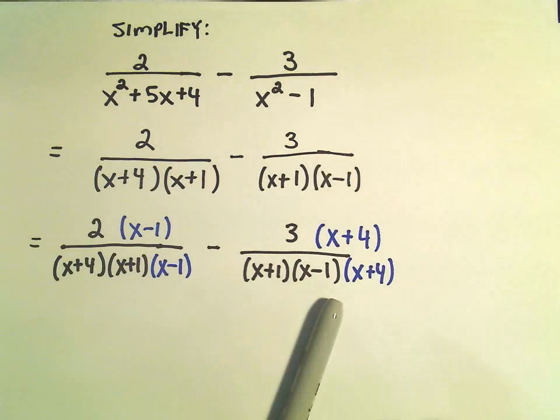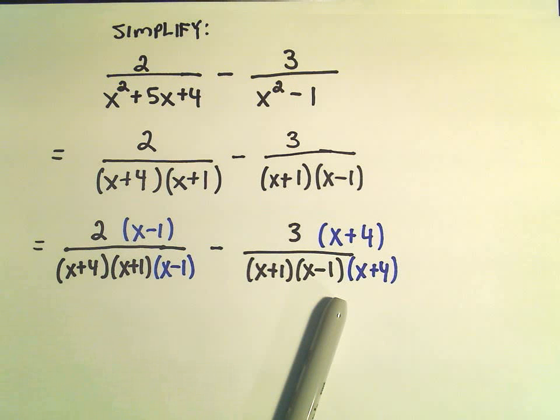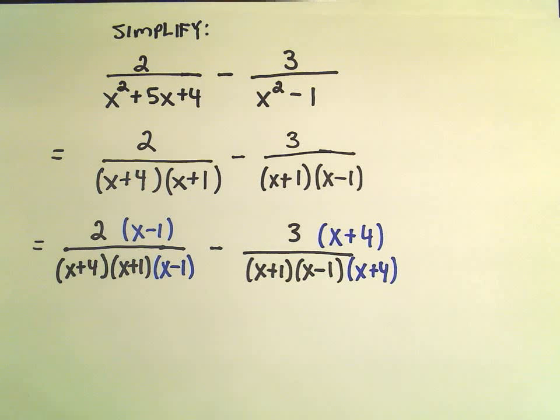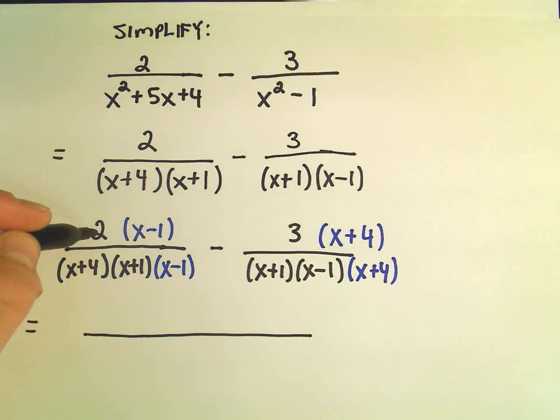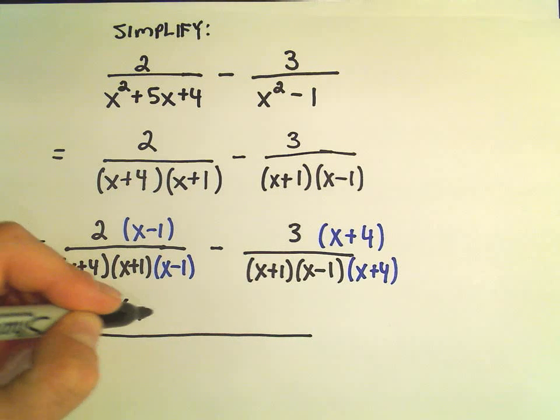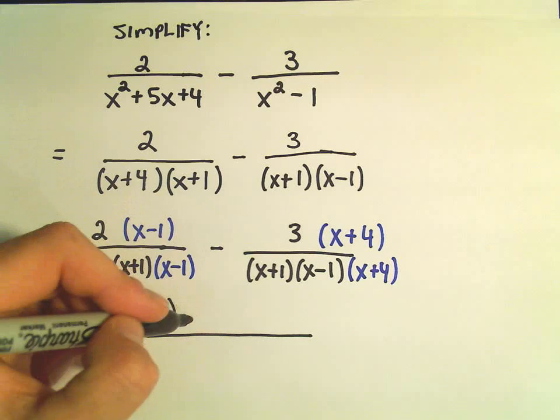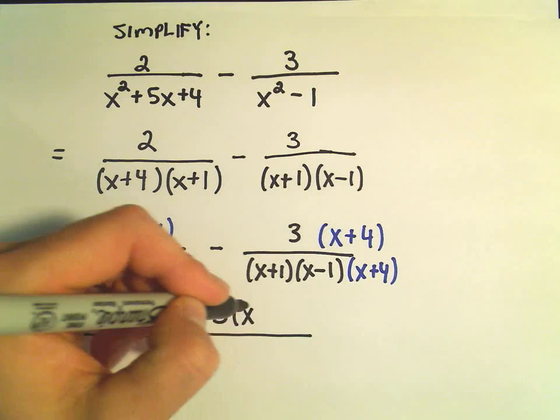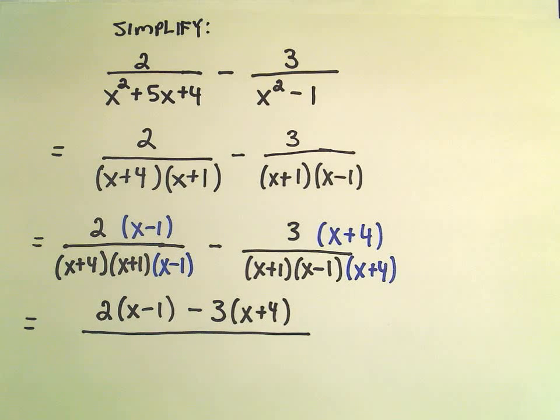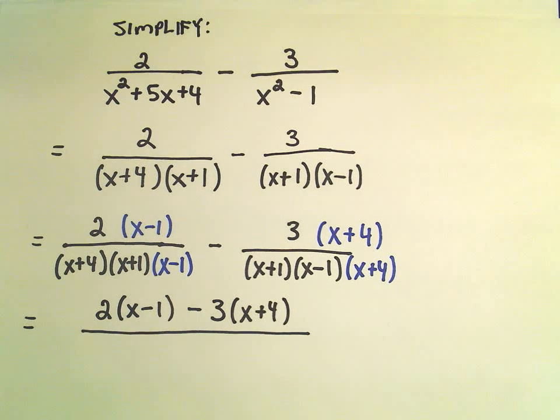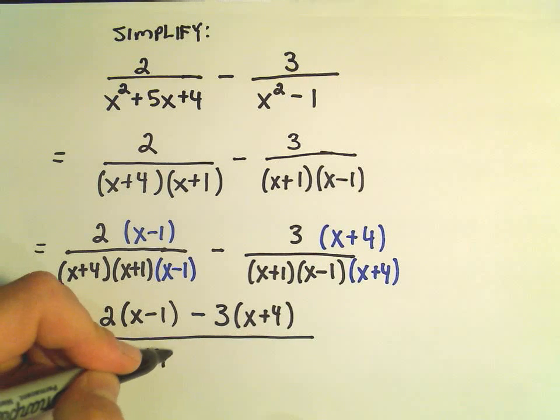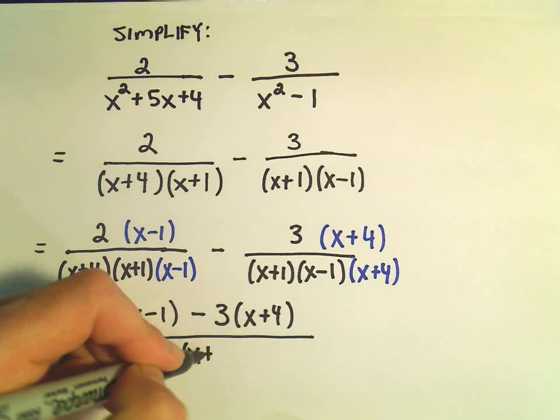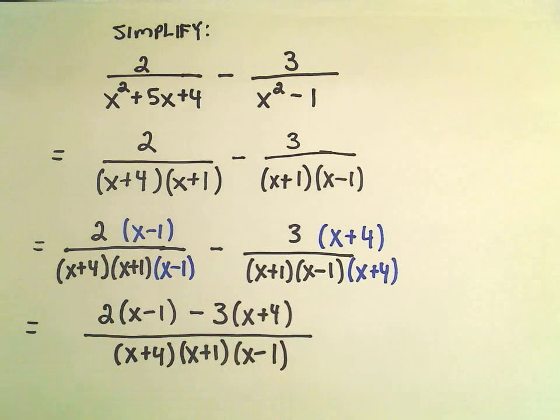So, it sounds a little tedious, but the basic idea to me is you multiply by what's missing, in a sense. Now we have to do a little bit of simplification. The arithmetic happens in the numerator. So we have 2 times the quantity x minus 1 minus, you can think about that as being negative 3, x plus 4.